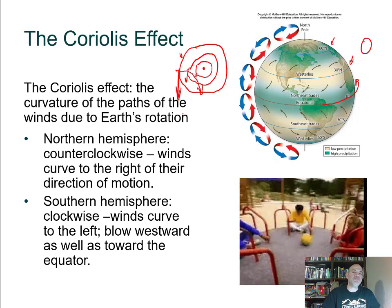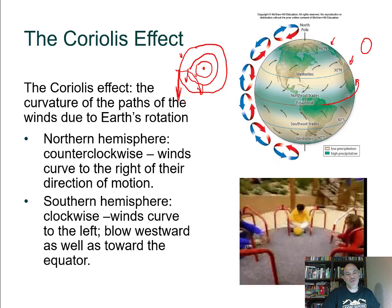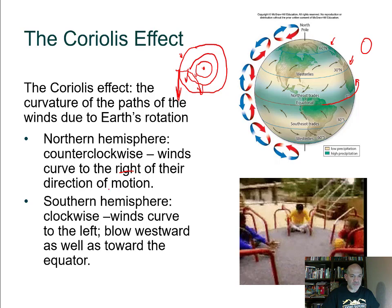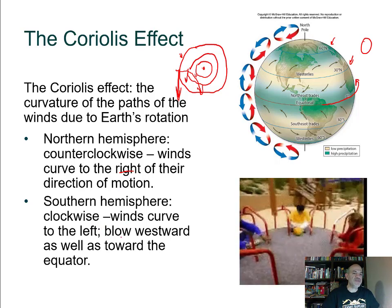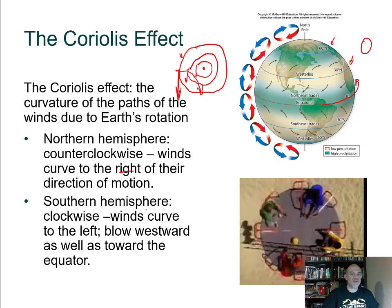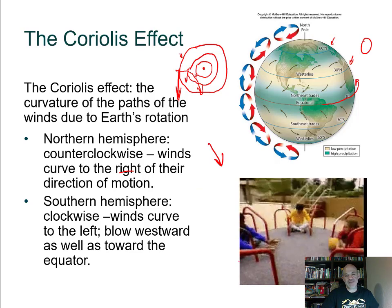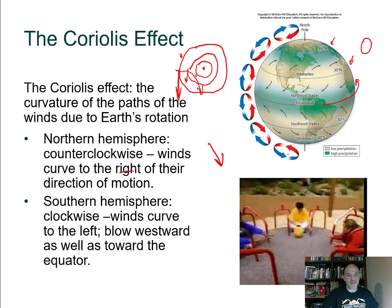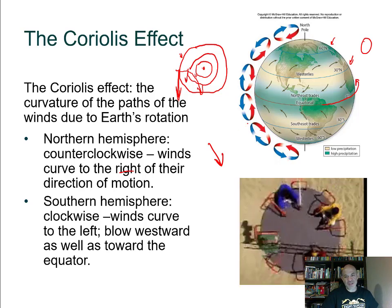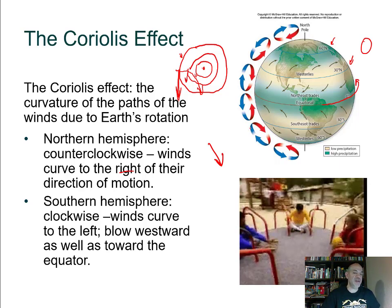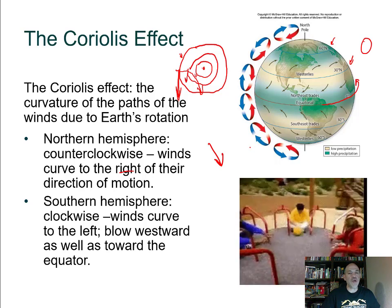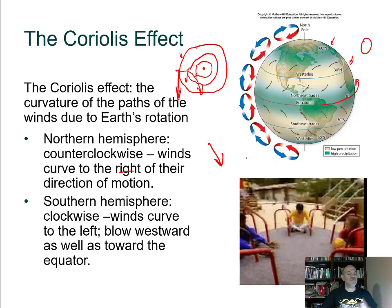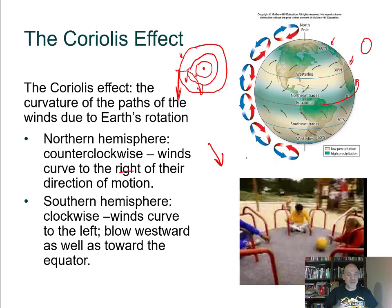The direction of the curve depends on which direction the Earth is spinning. In the northern hemisphere, winds curve to the right; in the southern hemisphere, winds curve to the left. This is demonstrated by a GIF showing a ball thrown toward the center of a merry-go-round curving due to the different tangential speeds at different distances from the center. The Coriolis effect influences wind patterns, which influences moisture and weather patterns, which in turn influences climate and life.